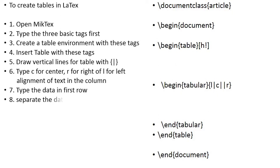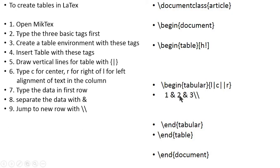Now type the data in the first row. Separate one data item from the other with the ampersand sign. To jump to a new row, just type double backslashes. So this is our data in the first row: 1 goes in the first column, 2 in the second column, and 3 in the third column. We have specified three columns — first left-justified, then a column separator vertical line, then 2 center-justified, then two vertical lines, and 3 right-justified.